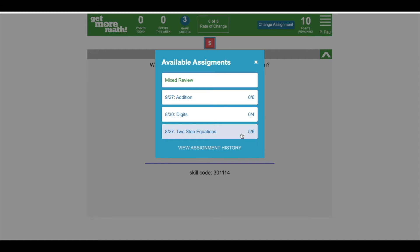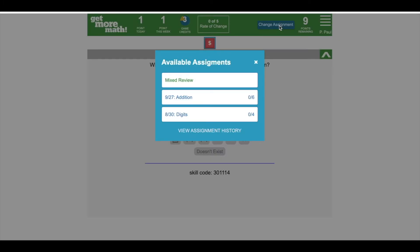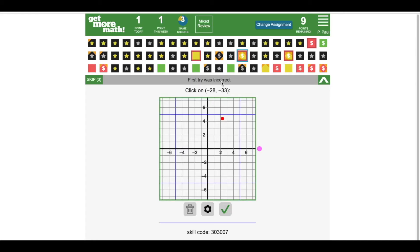If you select another assignment, you can earn points here that will be credited to your daily goal. You also have the option to select Mixed Review. By working in Mixed Review, you will see the most recent skills, plus all of the other skills your teacher has already taught you.